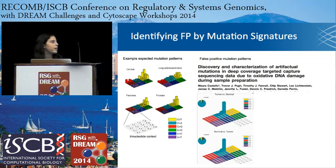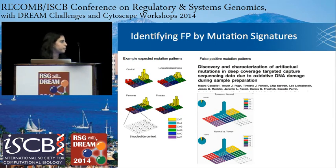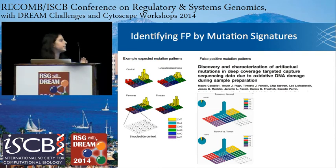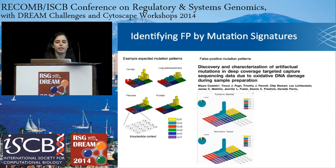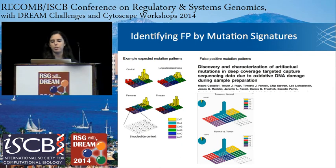We used this method previously and identified what we call the OXOG artifact, where oxidative DNA damage during sample preparation produces a signature dominated by C-to-A mutations in a specific context, overwhelming all other possible signatures. So either this could be an exciting scientific discovery — or it's an artifact in our data. Being somewhat cynical, I usually go with the latter. By identifying this signature, you can then dig into those mutations and filter them out appropriately.